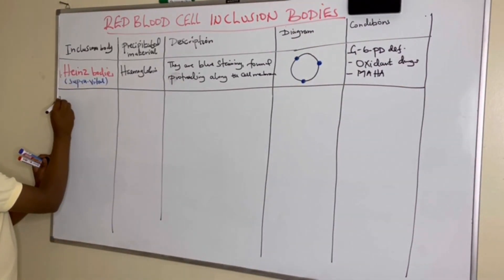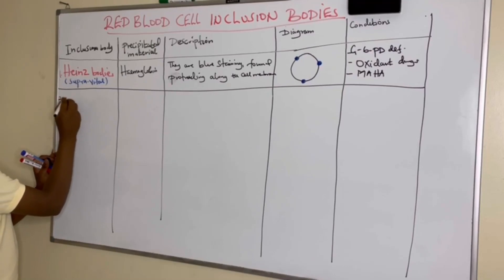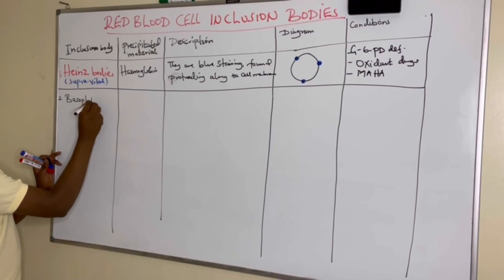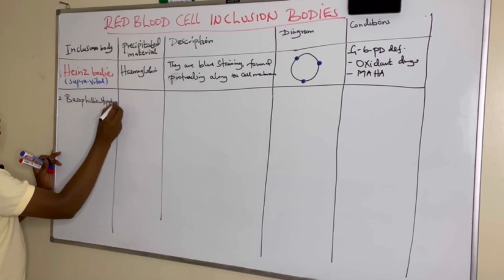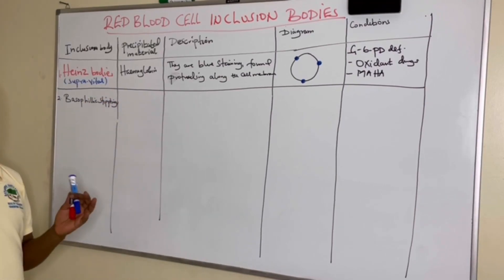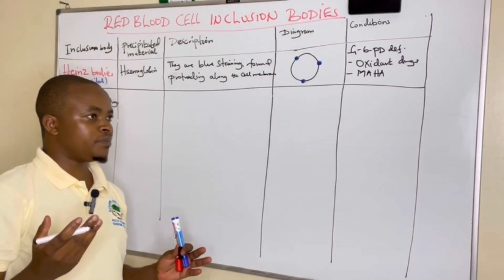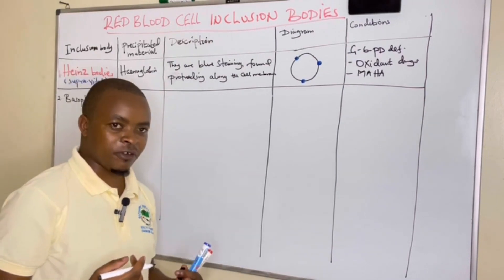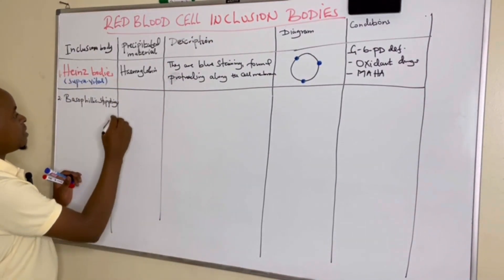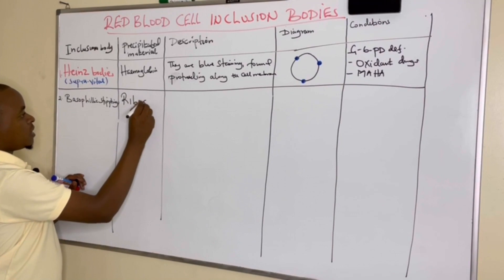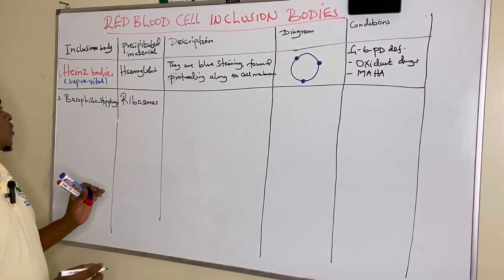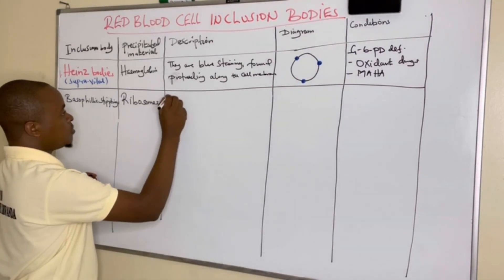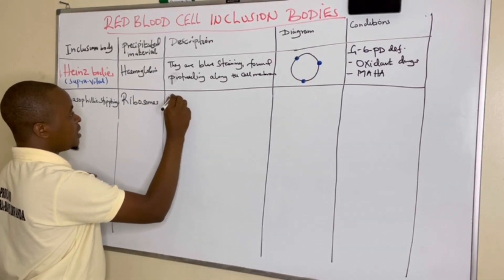The second inclusion body we can talk about is basophilic stippling — sometimes called punctate basophilia. These are also seen under a thin film, and the precipitated material is ribosomes. We know that ribosomes are always distributed in the cytoplasm, so these are small bodies.